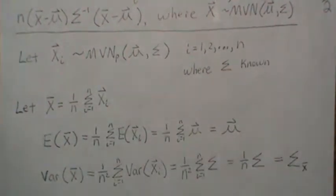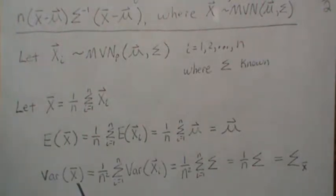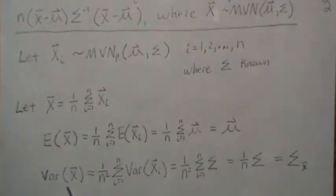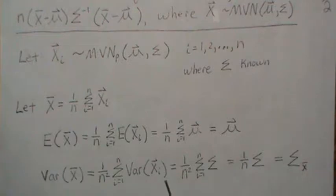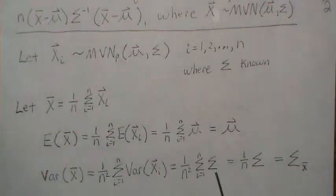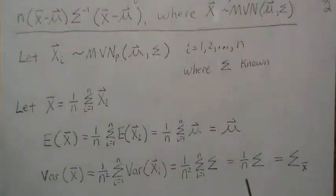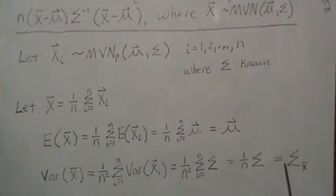The variance of x bar: when you stick this in, the constant comes out front squared, so it's 1 over n squared, and the variance operator can be taken inside the summation. The xi's are independent, so there's no covariance between them. The variance of each xi is sigma, and it's constant, so there are n of those, giving n sigma. One of the n's cancels, and we're left with 1 over n times sigma, which is often written as sigma sub x bar.